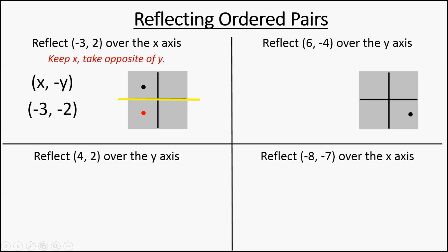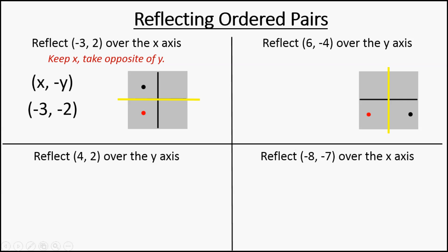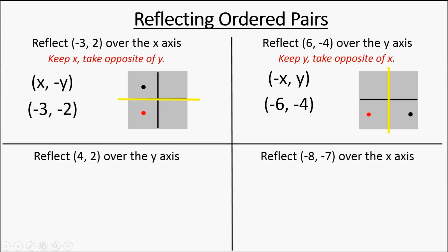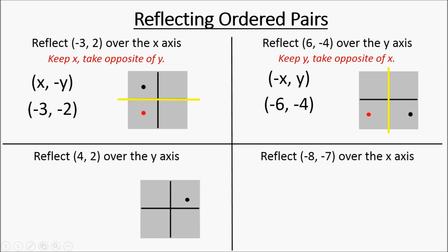For this next problem, we have six, negative four. That black dot is where six, negative four would be in quadrant four. If we're reflecting over the y-axis, there's a yellow line — we're reflecting over this line. It was to the right of the y-axis; now it's going to be to the left. In this case, you keep the y-value and you take the opposite of the x-value. The y-value stays the same — negative four is still negative four. And your new x-value was positive six, now it's negative six.